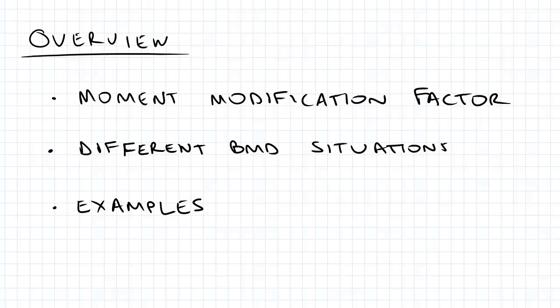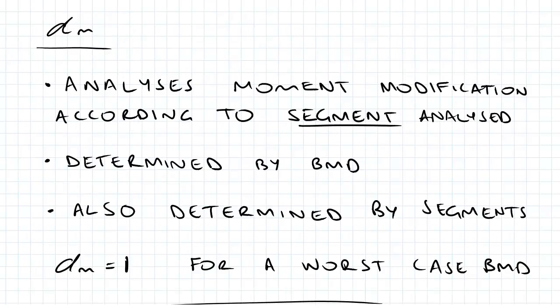Hi guys, today I'll be covering the moment modification factor alpha m, and I'll be looking at some different BMD situations. To support that, I'll be looking at some examples. So alpha m is one of the factors when we're calculating phi mbx, and that relates to basically that flexural torsional buckling moment.